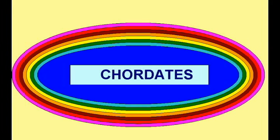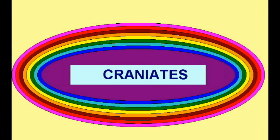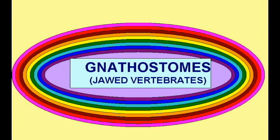Some deuterostomes developed a notochord, a pharynx with slits, homologs of the liver and hypothalamus, and are known as chordates. Some chordates developed a larger brain, and are known as craniates. Some craniates developed the beginnings of a backbone, and are known as vertebrates. Some vertebrates developed jaws, and are known as gnathostomes. Some gnathostomes developed a specific pattern of bony elements, and became the first osteichthyans.